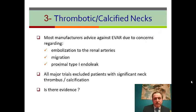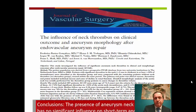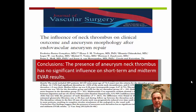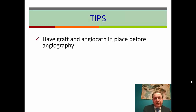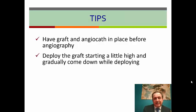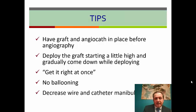What if we have excessive thrombus or calcification? We know the risks are embolization to the renal arteries, migration, or proximal type 1A endoleak. All major trials exclude patients with significant neck thrombus or calcification. But there is a nice paper from the Society of Vascular Surgery that looked at the influence of neck thrombus on clinical outcome and aneurysm morphology after EVAR, concluding that the presence of aneurysm neck thrombus has no significant influence on short-term and mid-term EVAR results. Tips: have the graft and angiocath in place before angiography, deploy starting a little higher and gradually come down, get it right at once to avoid excessive manipulation, no ballooning, and minimize wire and catheter manipulation.